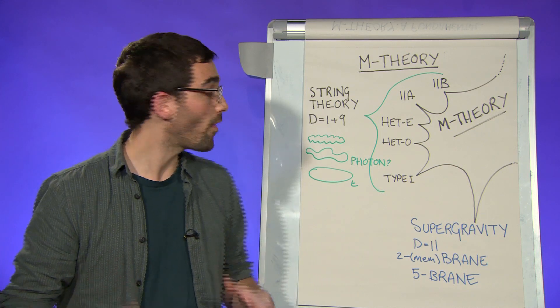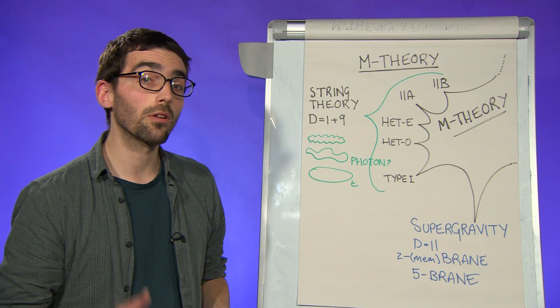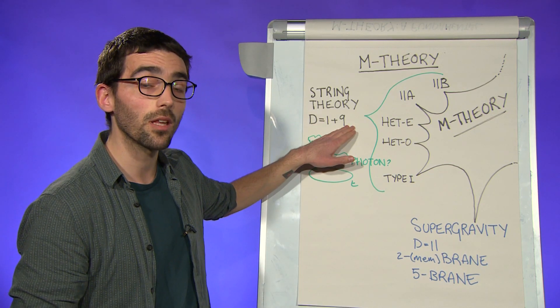It turns out that there are five possible string theories, and for quantum mechanical consistency, they have to live in one time and nine space dimensions.